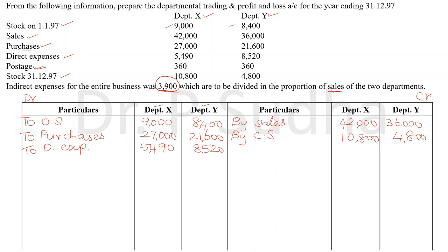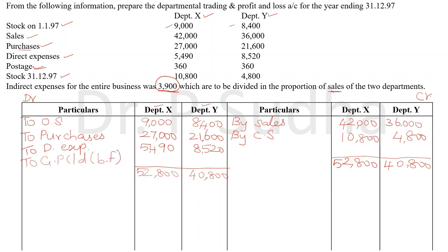After recording everything, we have to tally our trading account. The credit total of department X is 52,800 and department Y is 4,800. The credit total is higher, so I am writing the same total on the debit side also: 52,800 and 4,800. Now the balancing figure is gross profit carried down (B.F.): profit for department X is 11,310 and profit for department Y is 2,280. Bringing down the gross profit brought down: 11,310 for X and 2,280 for Y.